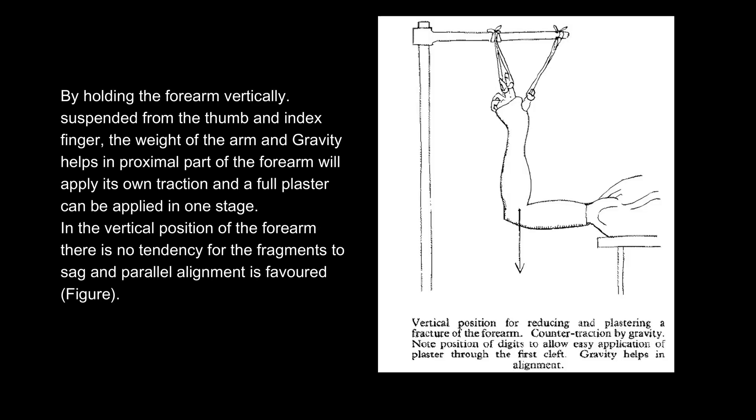By holding the forearm vertically, suspended from the thumb and index finger, the weight of the arm and gravity helps in the proximal part of the forearm, will apply its own traction and a full plaster can be applied in one stage.